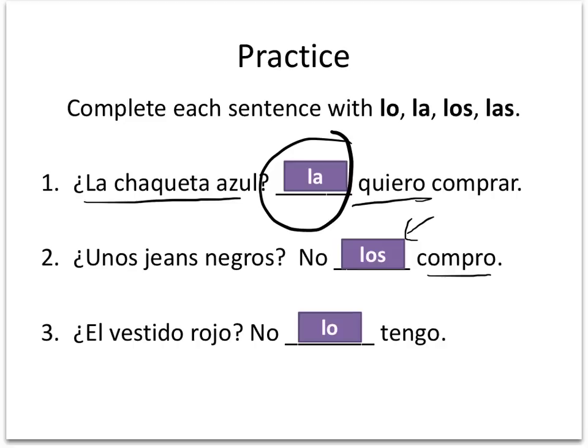Number three: I'm picking up this red dress, and I say el vestido rojo, no lo tengo. No, I don't have it. El vestido rojo is masculine, so picking lo would be correct as the direct object pronoun associated with el vestido. And you're going to put it in front of the conjugated verb, tengo.